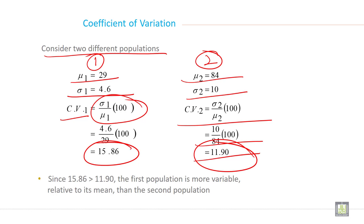So one is 15.86 while the second one is 11.90. What does it mean? Since 15.86 is greater than 11.90, the first population is more variable relative to its mean than the second population.